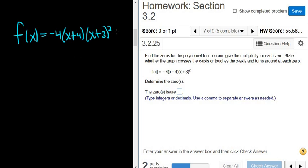So to find zeros, you just take this whole thing and you set it equal to zero. That means you set each factor equal to zero. So if you do that, you get negative 4 equals zero. That's impossible. You get x plus 4 equals zero, and you get x plus 3 squared equals zero.